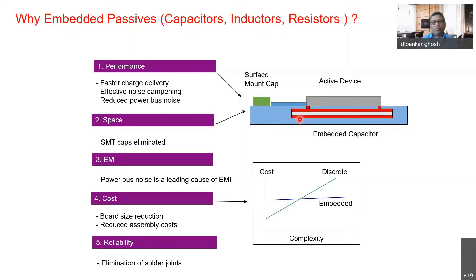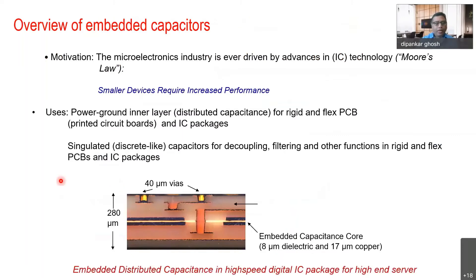3M has been making embedded capacitors for a while. They are connected to the active device by interconnects or vias. Advantages include faster charge delivery, simplified PCB design, lower noise dampening, greater signal-to-noise ratio, and board size reduction, which allows miniaturization of circuits and devices and reduces assembly cost. The motivation is driven by the electronics industry following Moore's law — we are getting to smaller and smaller devices which also require greater computing power.